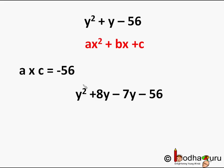And we can split the middle term y as 8y minus 7y because 8 into minus 7 is equal to minus 56 which is same as the product of extremes. We got y² + 8y - 7y - 56.